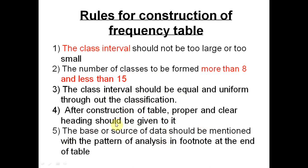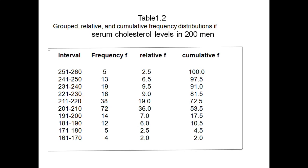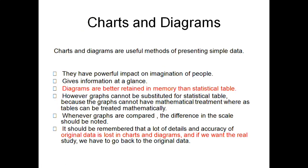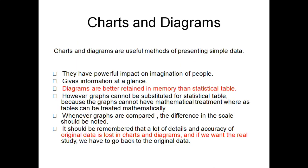In a frequency table, the age category can be divided into intervals: 0–4, 5–9, 10–14, 15–19, 20–24, and so on. The frequency column shows how many people belong to each class interval. This represents a class interval and frequency table.